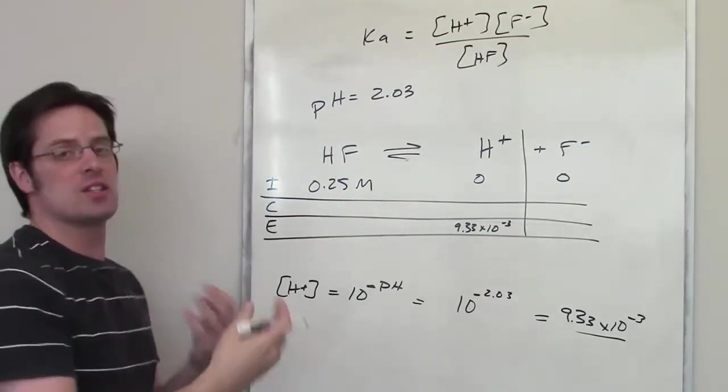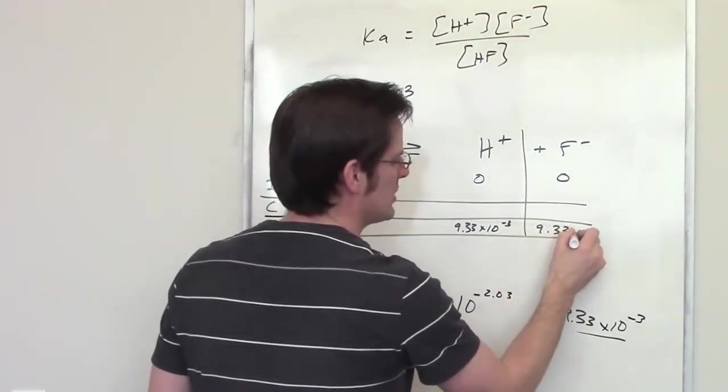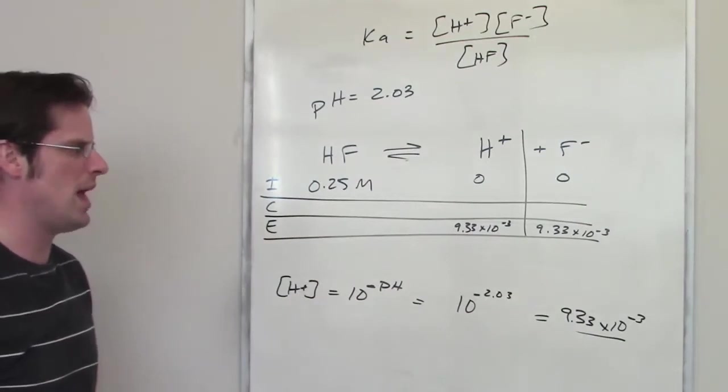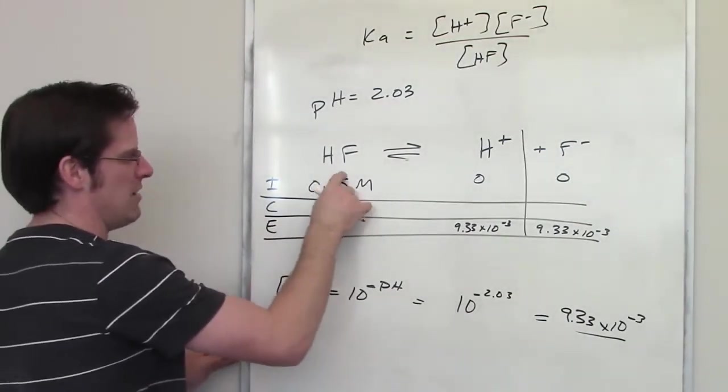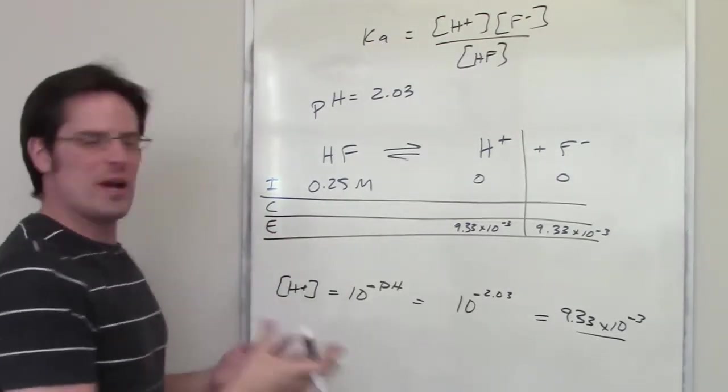Now, because there's a one-to-one ratio of H+ to F-, the final concentration of F- also has to be at equilibrium 9.33 times 10 to the negative third as well. What in the world is going to be the concentration of HF at equilibrium? I don't know yet. How do I get there?